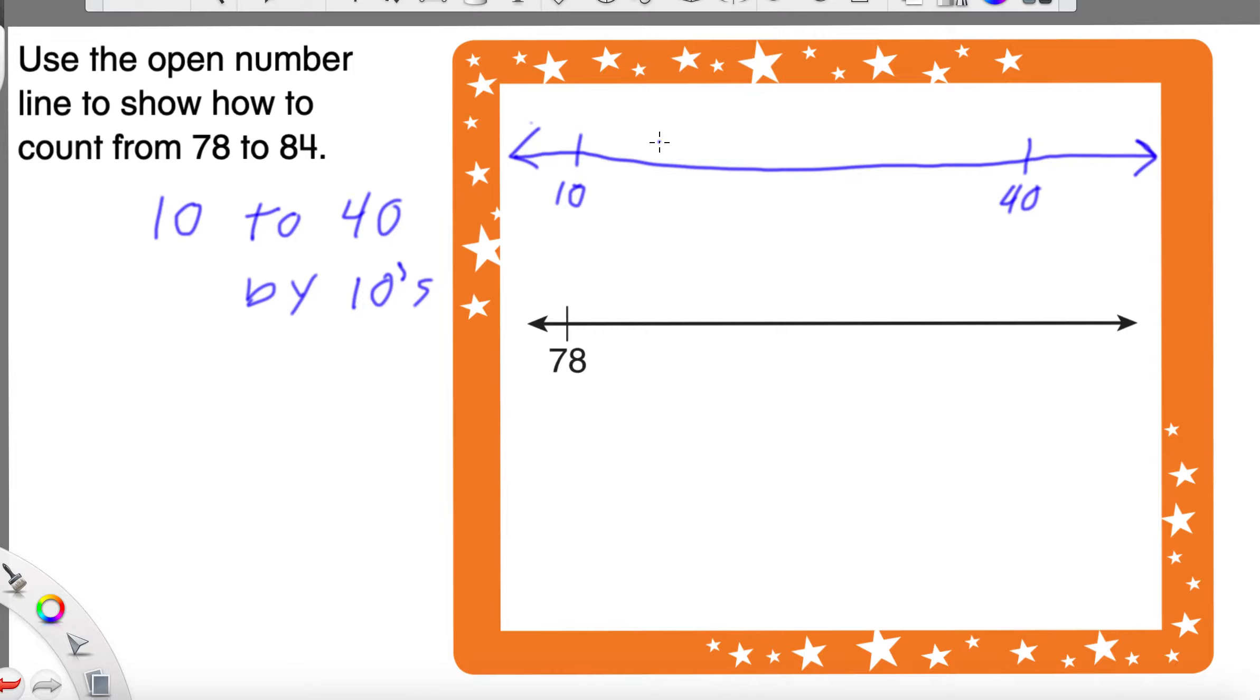If you turn back like 3 pages or 4 pages, there should be a 100 chart right there for you to use just in case you need it. From here, we can just kind of count by 10s. So, we go 10. What's 10 more than 10? 20. And then, what's 10 more than 20? 30.